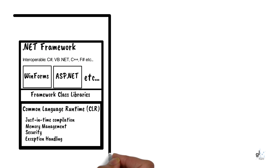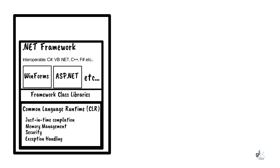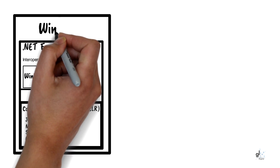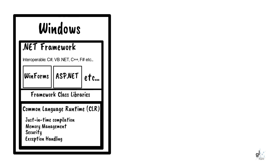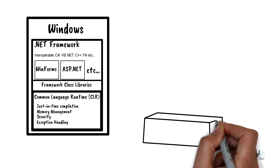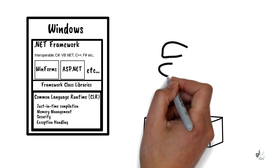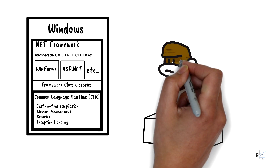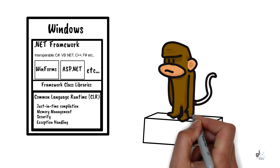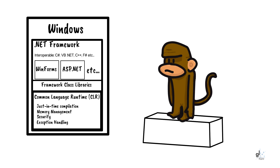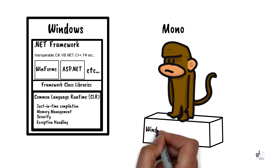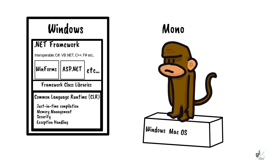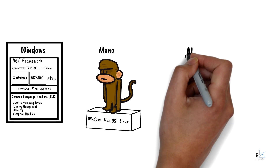However, .NET Framework could only run on Windows platforms and required a monolithic installation. .NET Framework does not run on Linux or Mac OS. Mono was released on June 30, 2004. Mono is a free open-source implementation of Microsoft's .NET Framework based on the ECMA standards for C# and the Common Language Runtime. Mono is a version of .NET that could run on multiple platforms — Windows, Mac OS, and Linux.